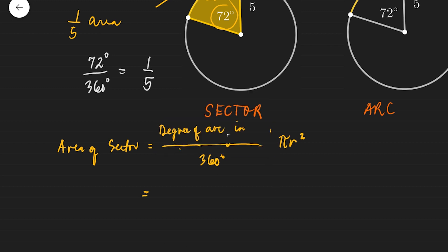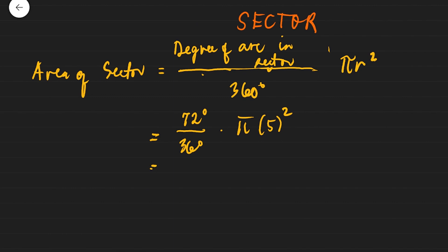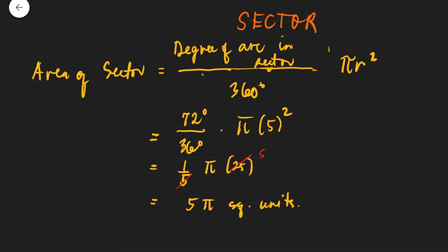For this example, the degree of arc in sector is 72 over 360 degrees, times pi r squared, where r is 5. So that's 72 over 360 — which is one over five — times pi times 25. Cancel the five, and you get five pi. Therefore the area of the sector is just 5pi square units.